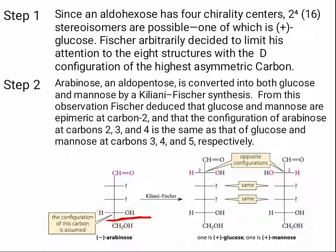Step 2: arabinose, an aldopentose, is converted into both glucose and mannose by Kiliani-Fischer synthesis. From this observation, Fischer deduced that glucose and mannose are epimeric at carbon 2, and that the configuration of arabinose at carbons 2, 3, and 4 is the same as that of glucose and mannose at carbons 3, 4, and 5 respectively.